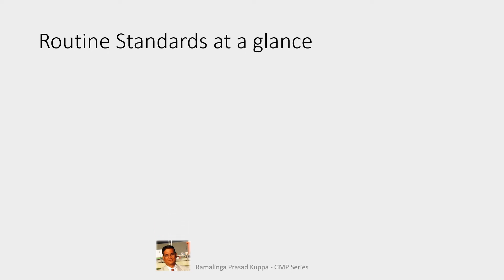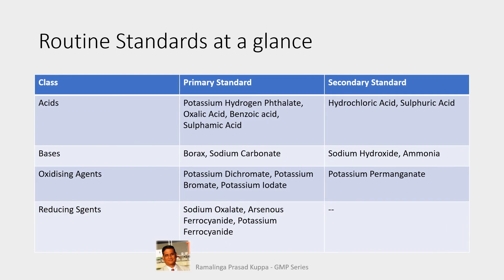Routine standards at a glance — here is the list with titration class, relevant primary standards, and secondary standards, covering acid-base titrations and redox titrations. Note that potassium permanganate is a powerful oxidizing agent but is prone to faster decomposition, which is why it is classified as a secondary standard. It must be standardized using sodium oxalate or oxalic acid. Sodium oxalate is recommended over oxalic acid because its purity is around 99.95%.